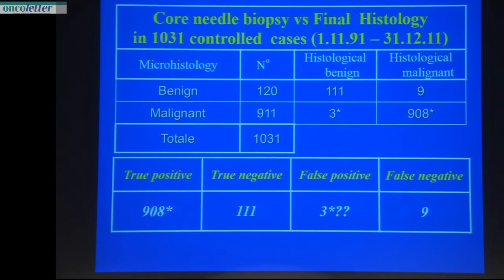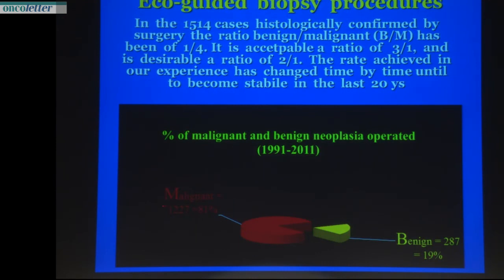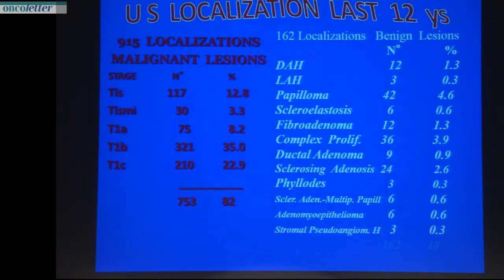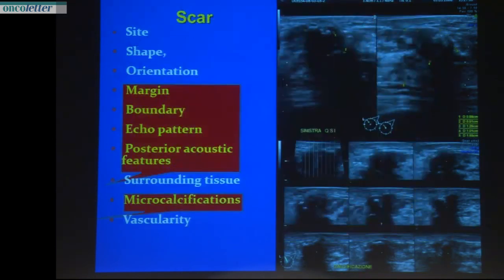My goal is to reduce the number of interventions for benign lesions. In our series: 111 benign lesions and 900 cancers — an incidence of 19% benign versus 81% malignant. The acceptable ratio is 3 to 1, but in our statistics it is 1 to 4. The most frequently operated lesion is papilloma. Scar tissue is a very rare indication — when you have a post-surgical scar and a new lesion develops, a core biopsy is sufficient.